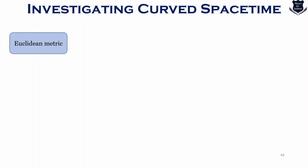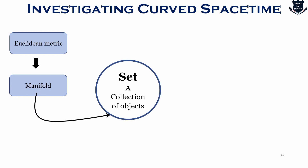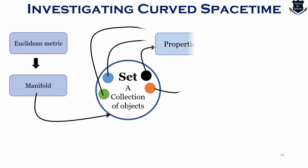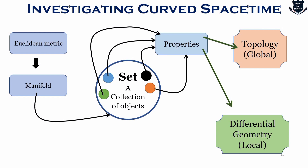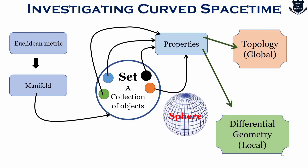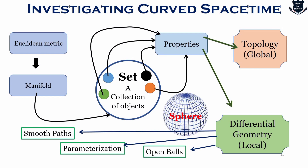To give a broader picture: we initially start with the Euclidean metric, then move into manifold. These manifolds are taken care of by the mathematics of set theory. These sets are collections of objects, and these objects have different properties — studied either by topology on a global scale or by differential geometry on a local scale. Then we get a sphere, and from this sphere we need an open ball, closed set, open set and all those calculations. Differential geometry deals with open balls, parameterization, smooth paths, smooth functions and so on.